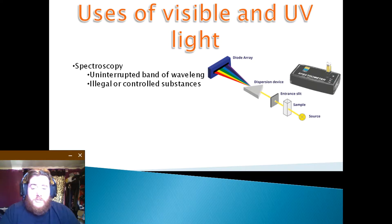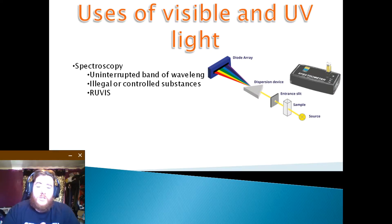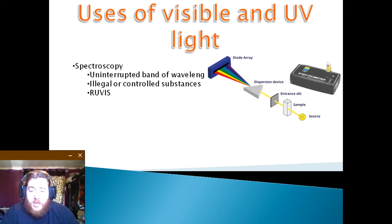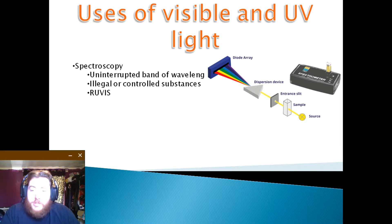Ultraviolet reflectance spectroscopy generates images from ultraviolet radiation in a technique known as RUVIS — Reflective Ultraviolet Imaging Systems. This allows the detection of latent fingerprints on a non-porous surface without the need for dusting or chemical treatments.